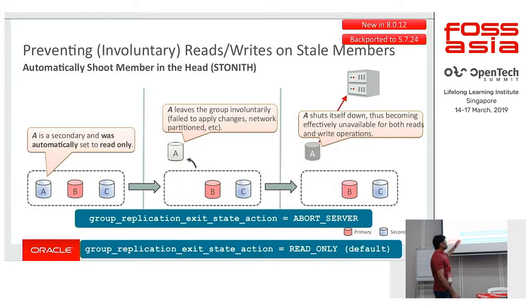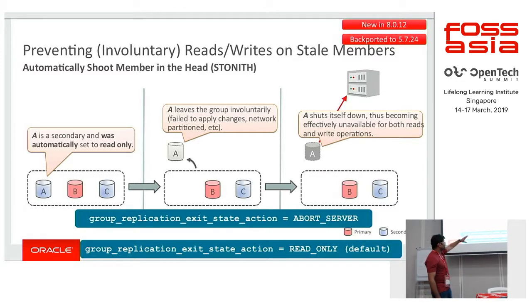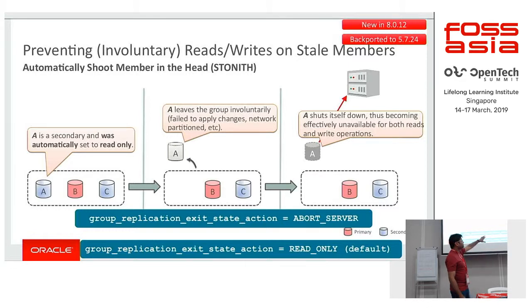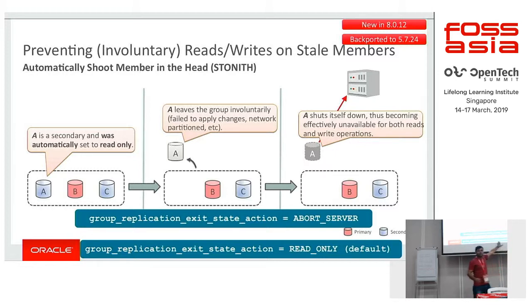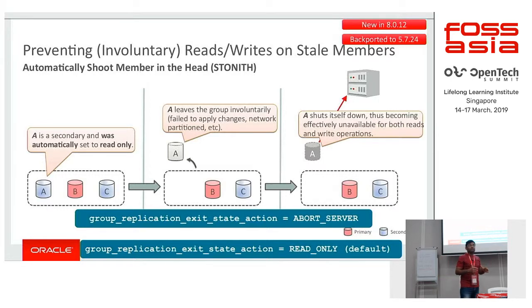One step further: assume network partitioning happens, as networks are quite unreliable. Suppose there is a network glitch due to which member A gets separated from the group. During that point we have two mechanisms. One: the member should become read-only and only read operations are allowed — no writes. For that I can set the exit state action to read_only, which is the default. If I want it more secure, I can set the value to abort_server, so that member will shut down automatically and there will be no reads or writes from the router to that particular member.